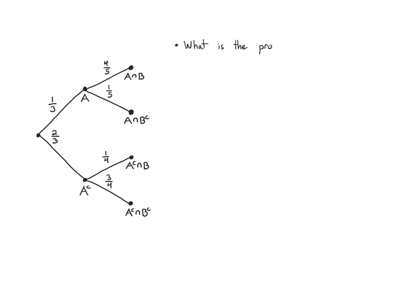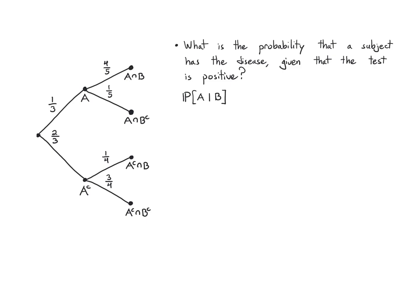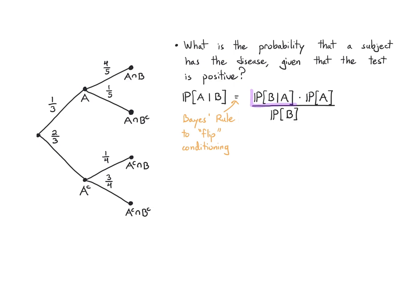Let's go back to the first question: what is the probability that a subject has the disease given that the test is positive? This is the probability of A given B, which is not given explicitly. I need to use Bayes' rule because I'm trying to flip the conditioning around. To flip the conditioning, I take the probability of B given A times the probability of A, divided by the probability of B, which I computed in the previous problem. Plugging in these values, I get eight over thirteen.